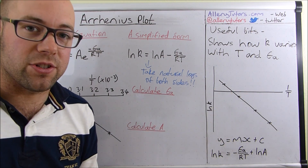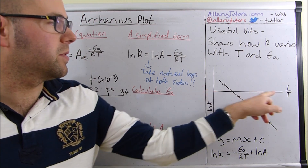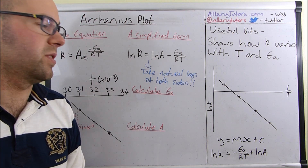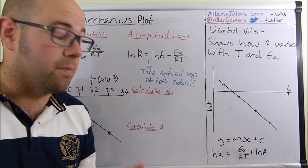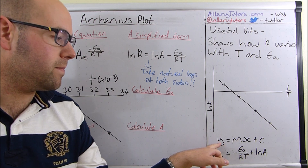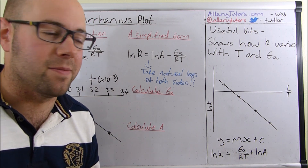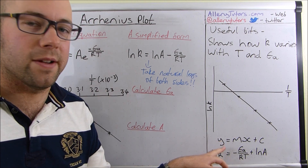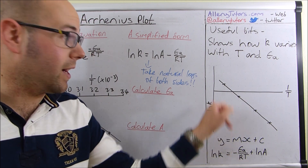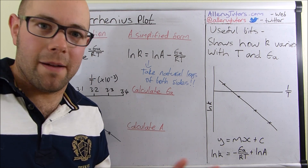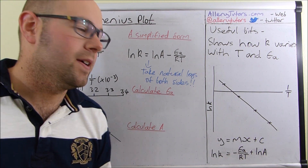Here's a graph we've sketched out — on the y-axis we've got the natural log of k, which is our rate constant, and this is plotted against 1 over T on the x-axis. We always get a straight line graph when we do these, and because we've got a straight line we can use the straight line formula y equals mx plus c. Just a reminder: y is the y-axis, m is the gradient, x is 1 over T, and c is the intercept.